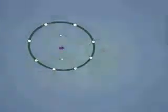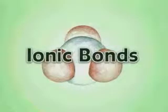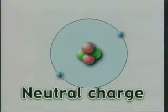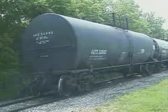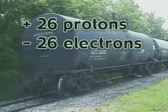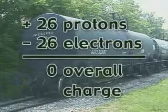Atoms tend to bond in ways that make their outermost energy levels complete with electrons. When this occurs, atoms achieve stability, which is their general tendency. When an atom has an equal number of positively charged protons and negatively charged electrons, it has a neutral charge. For example, iron, such as that found in these railroad cars, has 26 protons and 26 electrons, giving it an overall charge of zero.